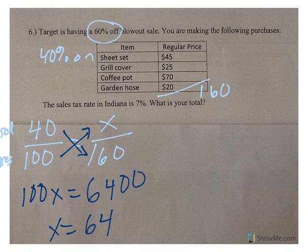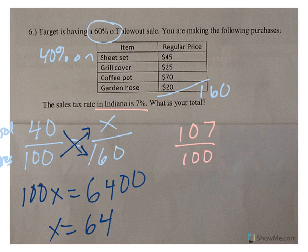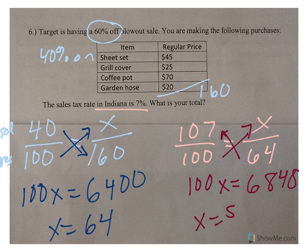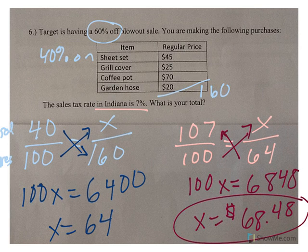But that's not your total because you've got to pay taxes — don't forget taxes. Taxes are on top of it, so 107%. If I know I'm paying $64, how much am I paying with taxes? It's like a double problem. Cross multiply: 100X equals 68.48. Divide by 100. I'm paying $68.48 for all of those items with tax. And that is your practice with percent change.